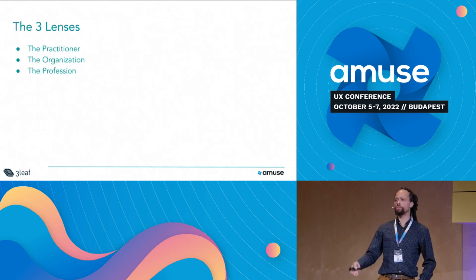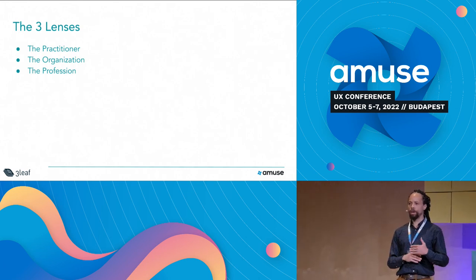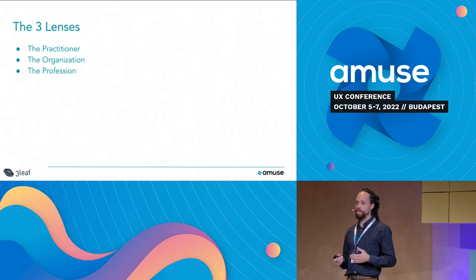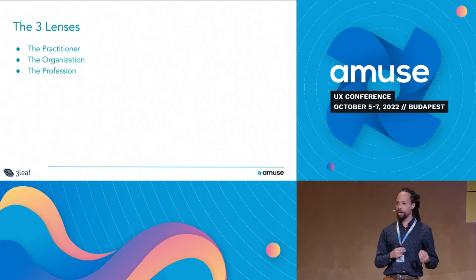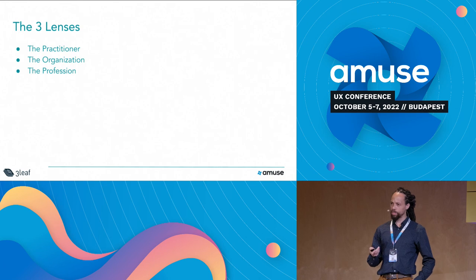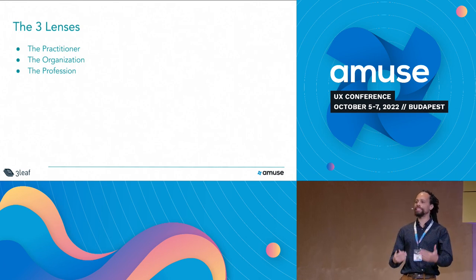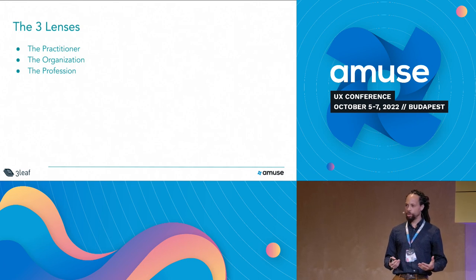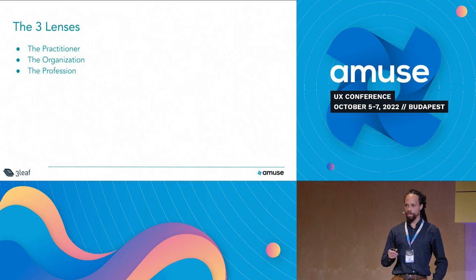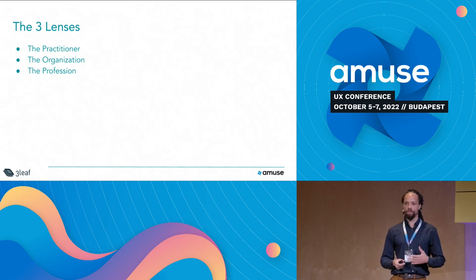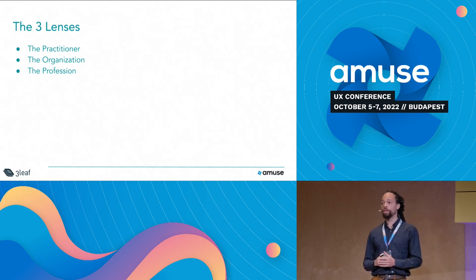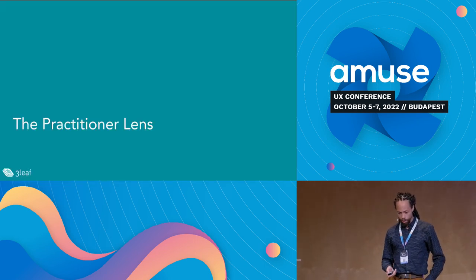I'm going to go through this talk with three different lenses. The foundational lens is the practitioner — that's us as individual practitioners. What should we do regarding DVUX? Then the organization layer — if you're a manager or director responsible for a group of designers, how do we think about DVUX on that level? And the last one on the highest level, the profession: what do we as designers think about as this relates to our entire profession?